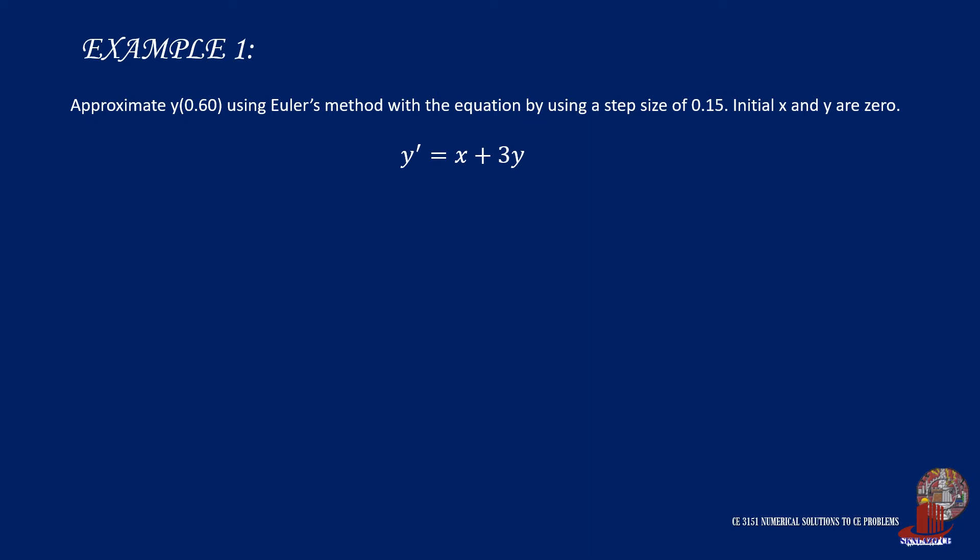Start by listing the given, which are the initial x and y of 0. h is 0.15 and we are tasked to find y if x is 0.6.